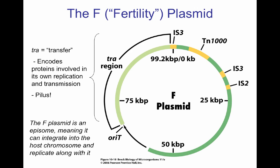The fertility plasmid — the F-plasmid — contains TRA genes required for transfer of the plasmid. That includes the pili machinery allowing conjugation. It is an episome, meaning it can integrate into the host chromosome and replicate with it. Not all plasmids are episomes; some stay as extra-chromosomal entities. Plasmids can use IS2 or IS3 insertion sequences that have homology with IS regions in the bacterial chromosome to integrate the plasmid into the chromosome.